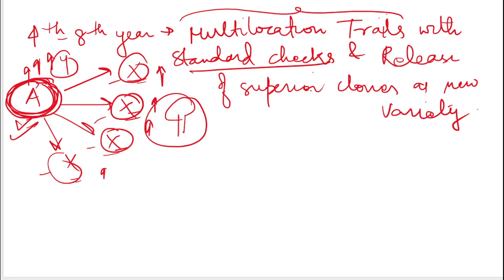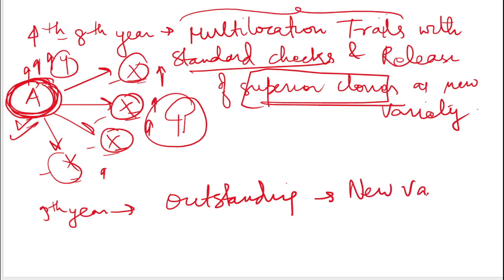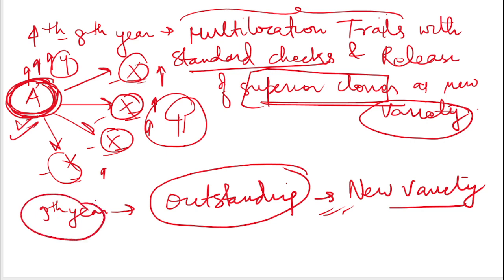Then we release that superior clone as a new variety. I hope you understand the steps involved in clonal selection. The whole process takes around 9 years in total.